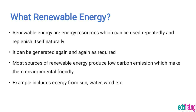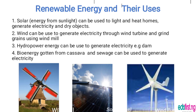This makes them environmentally friendly. Examples include energy from the sun, water, wind, etc. Renewable energy and their uses: solar energy — that is, energy from the sun — can be used to light and heat homes, generate electricity, and dry objects.